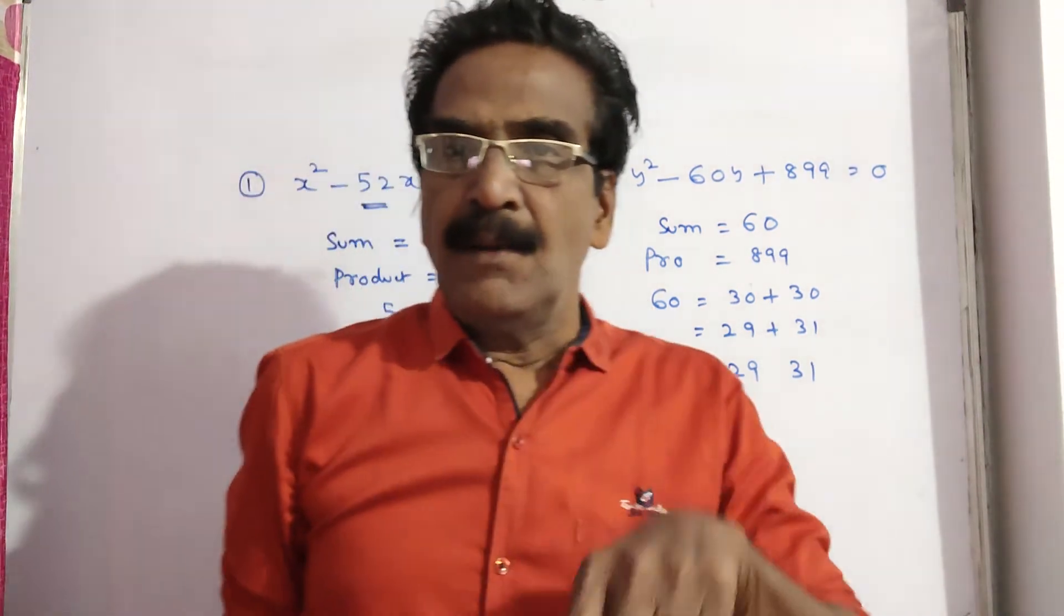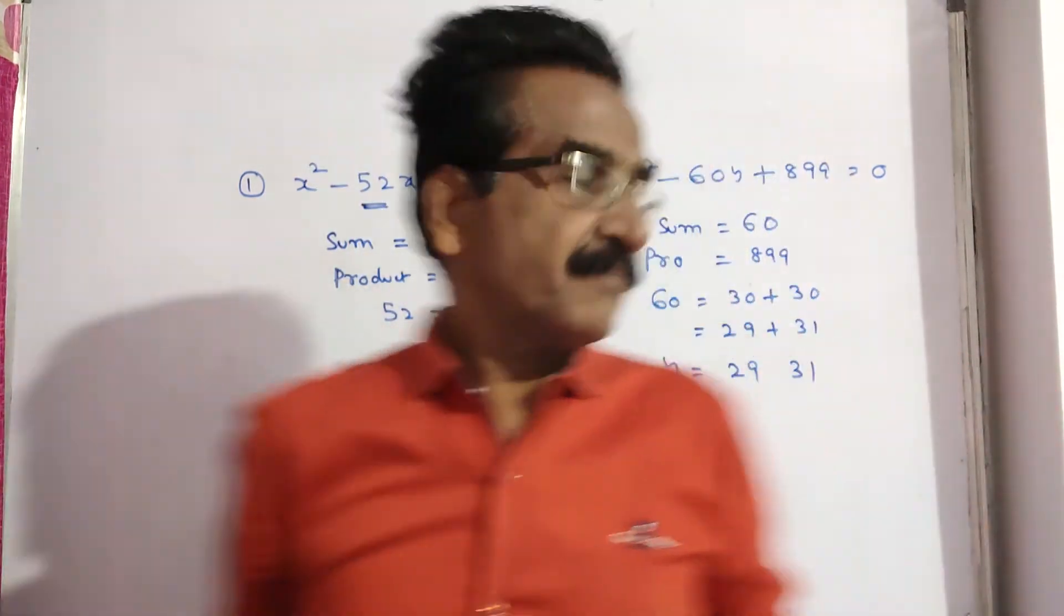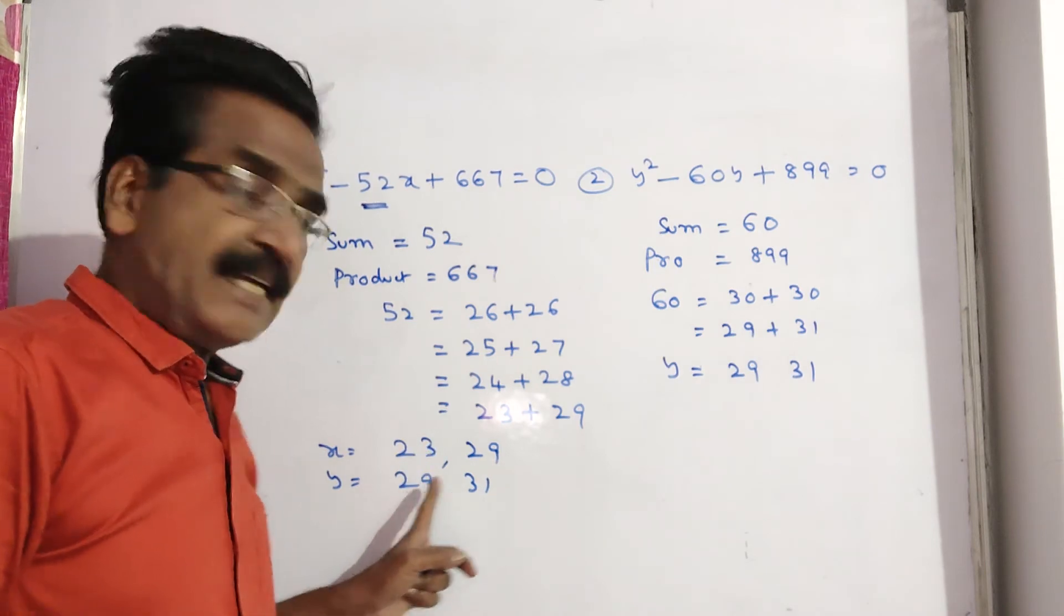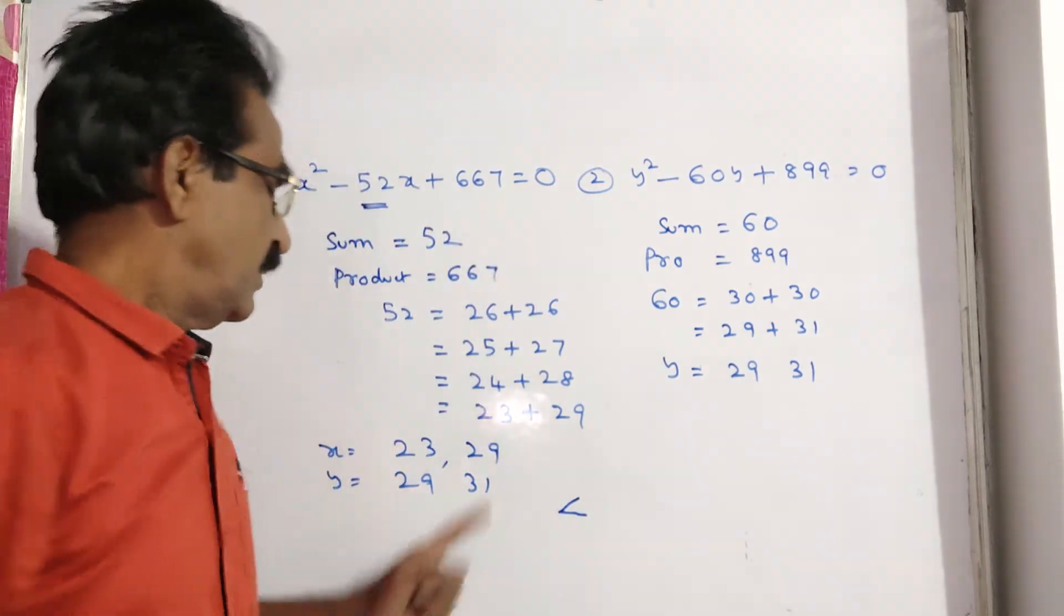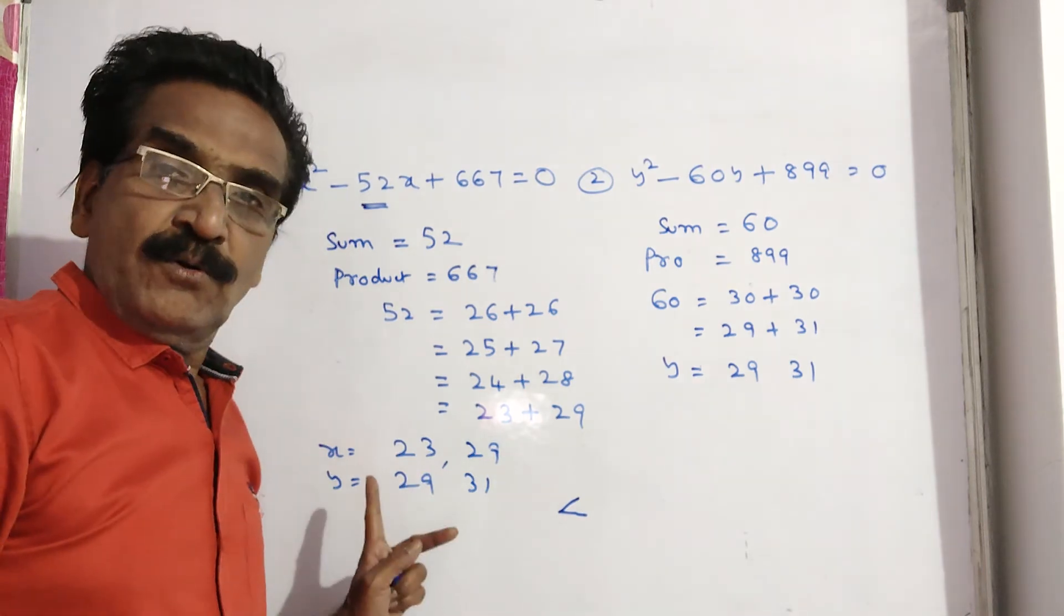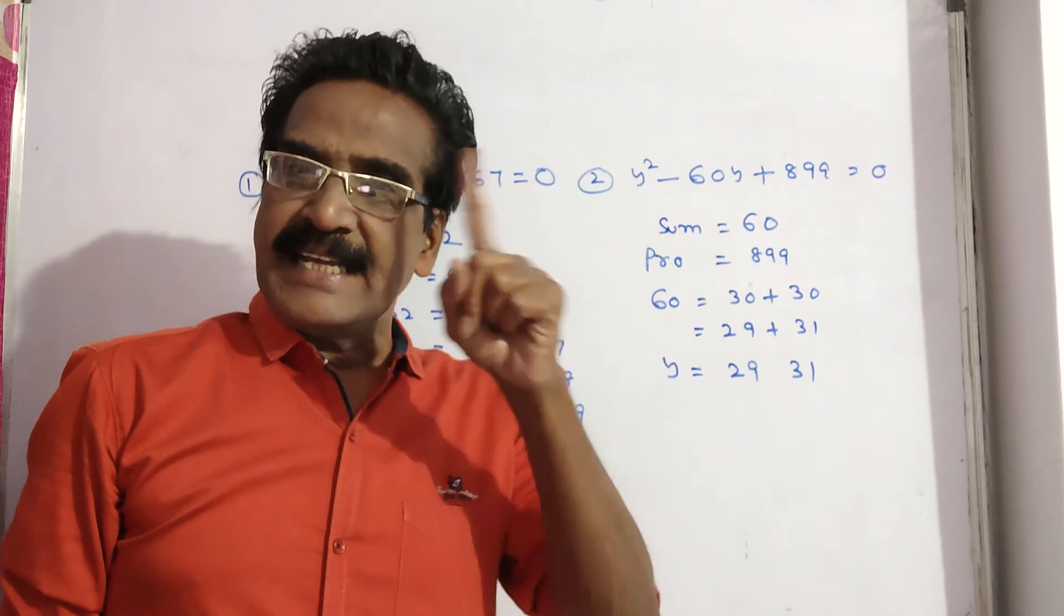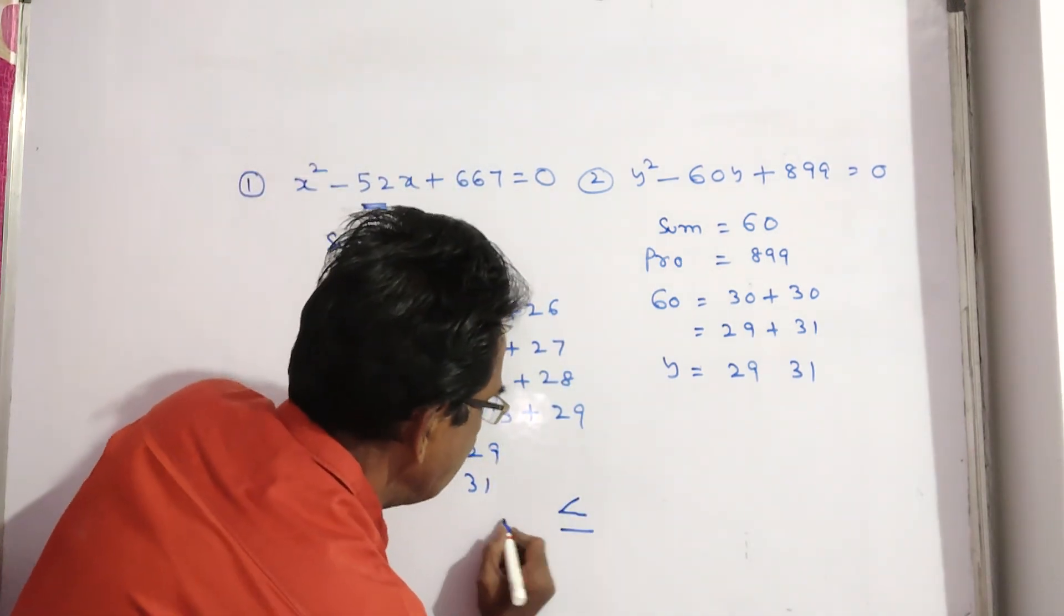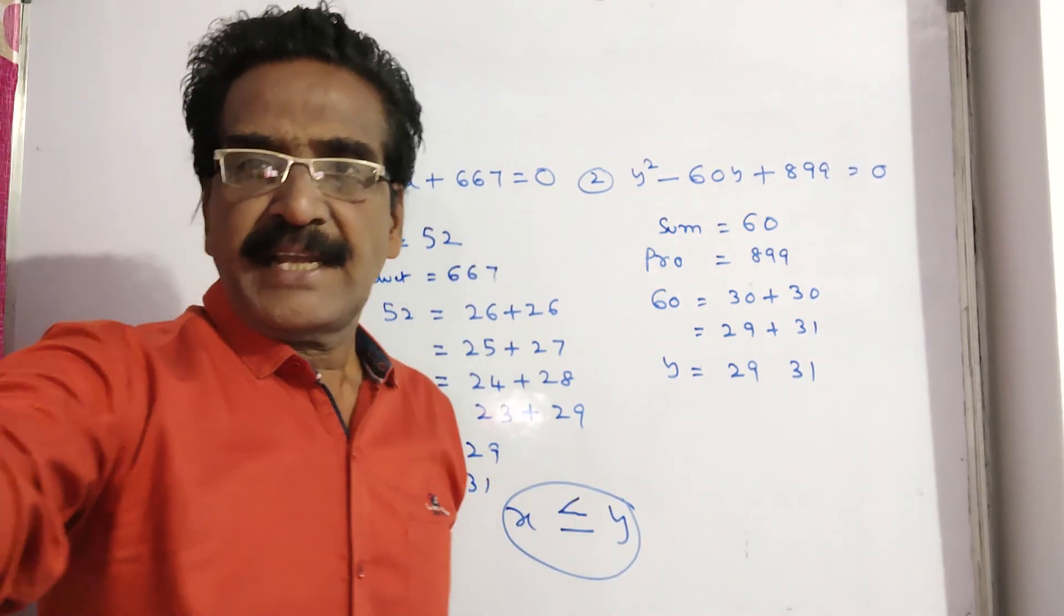Now we have to compare both the values of x with both the values of y. See, here, 23 is less than both 29 and 31. So less than. Here, 29 is less than 31 but equal to 29. So all together we are getting two relations, either less than or equal to. So here our relation is x less than or equal to y. Okay friends, thank you, have a nice day.